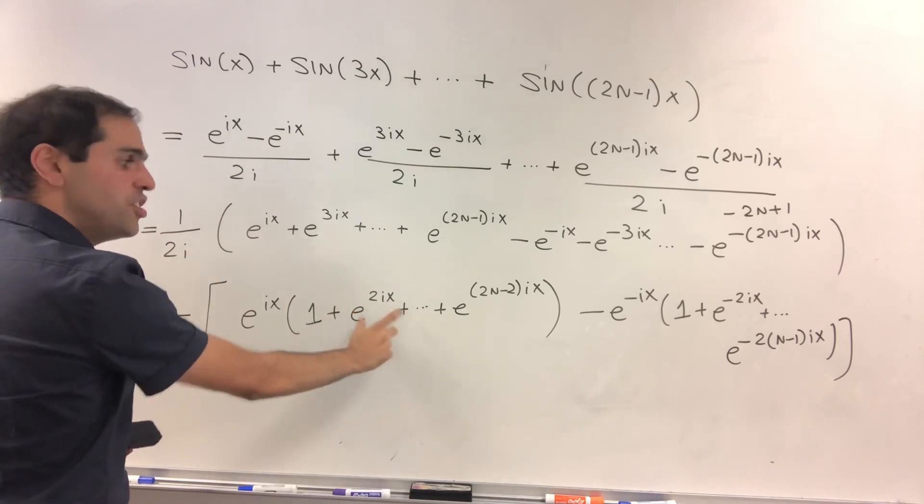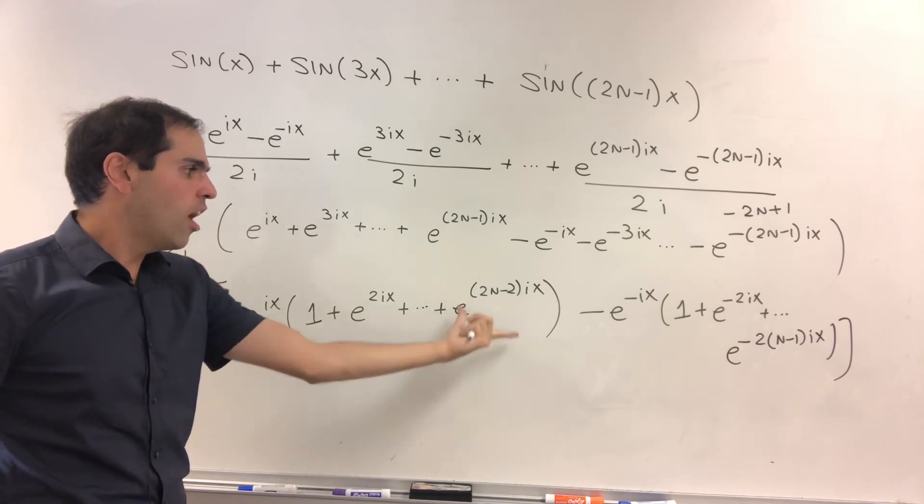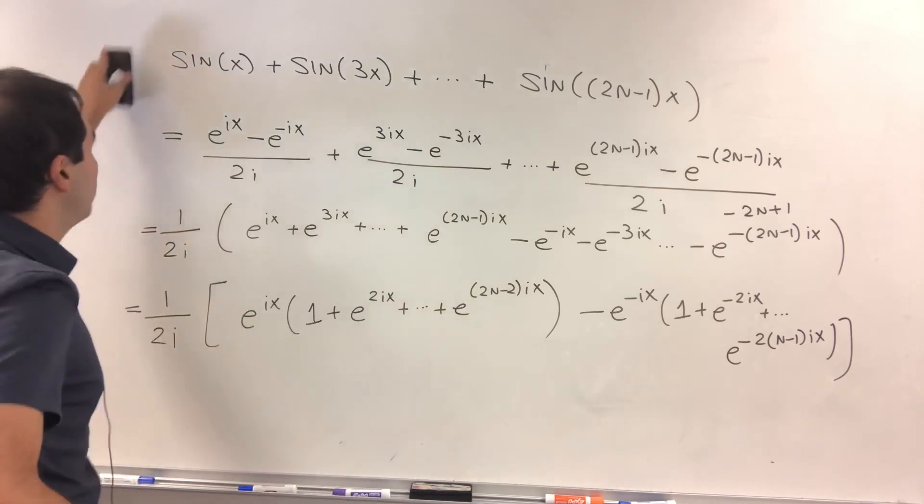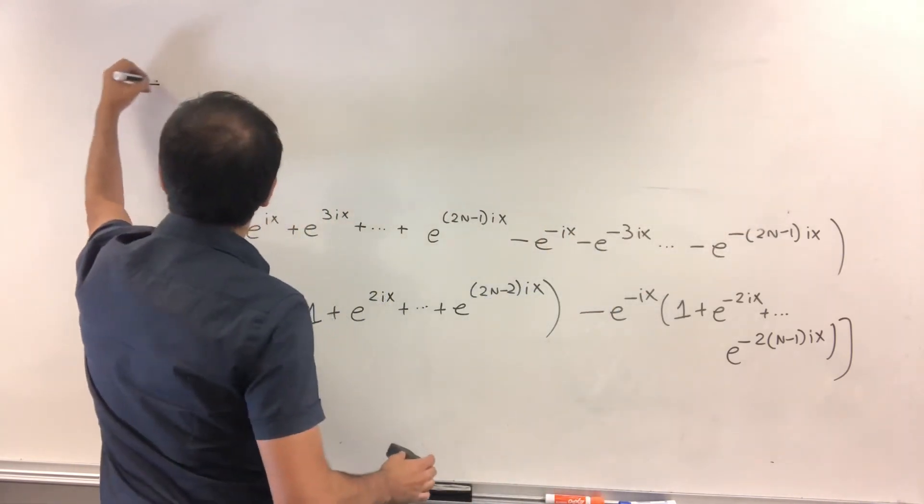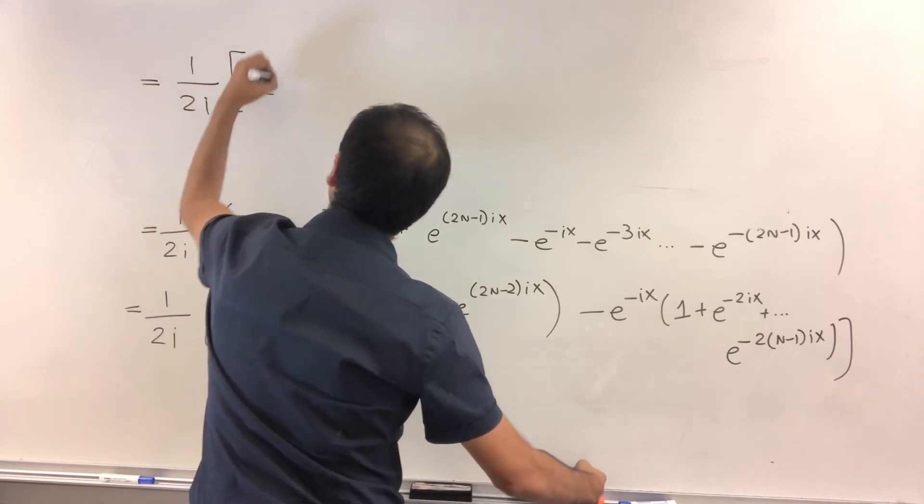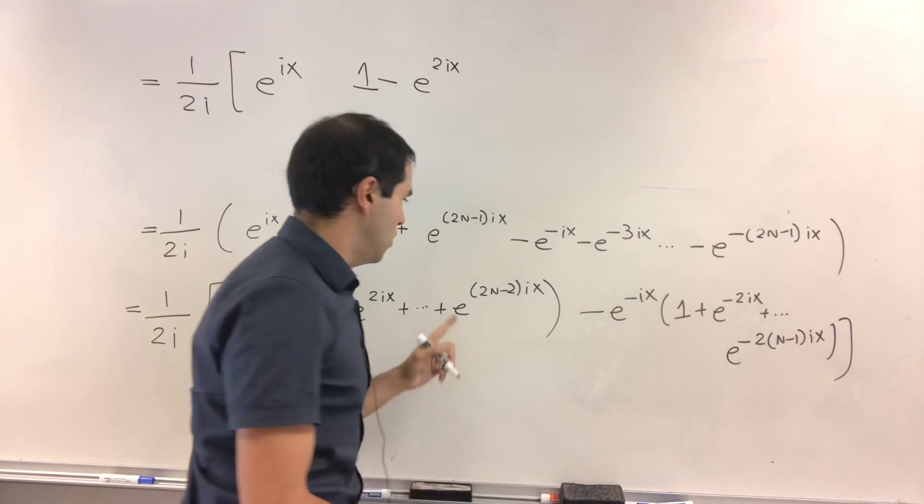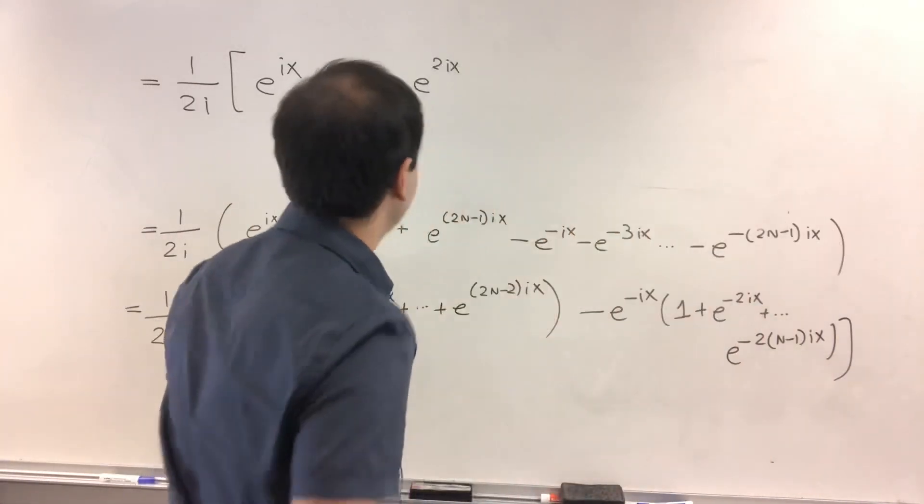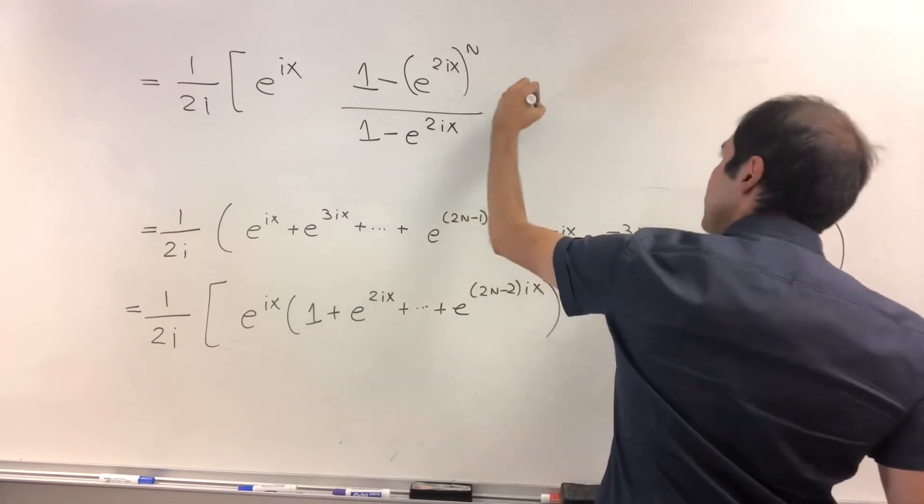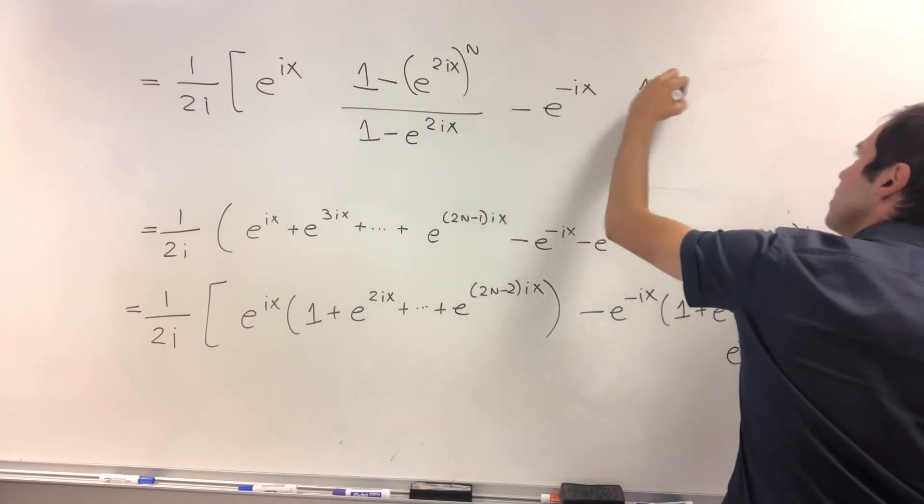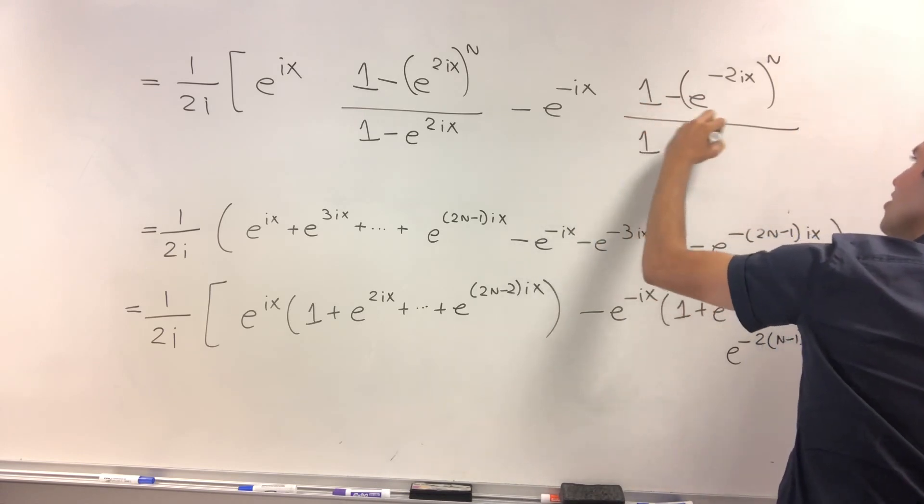And again, the nice thing is this is a geometric sum because this is just 1 plus e to the 2ix, e to the 2ix squared, up to, I believe, the power n minus 1. So by the formula for the geometric sum, all this is is the following. This is 1 over 2i times e to the ix, 1 minus e to the 2ix. And I believe to the nth power, because it's n minus 1, to the n, very good. And over 1 minus e to the 2ix. And then same spiel with e to the minus ix. So 1 minus e to the minus 2ix to the n over 1 minus e to the minus 2ix.